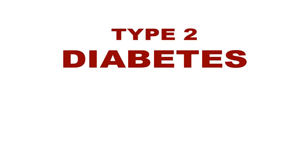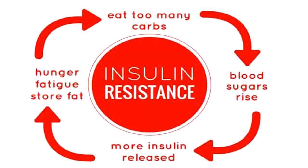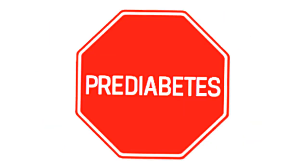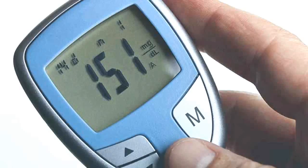Type 2 diabetes occurs when your body becomes resistant to insulin and sugar builds up in your blood. Another type is pre-diabetes, which occurs when the blood sugar is higher than normal but not high enough for a diagnosis of type 2 diabetes.